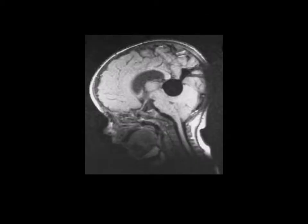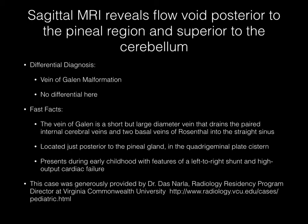Now pause your media player. This sagittal MRI image reveals a vascular flow void posterior to the pineal region and superior to the cerebellum. The diagnosis here is vein of Galen malformation. There really is no differential here.